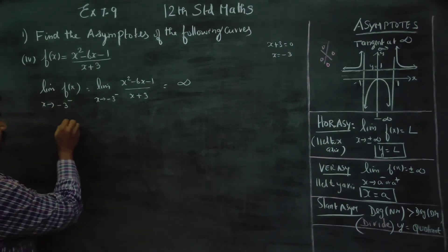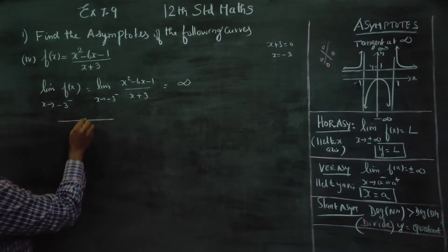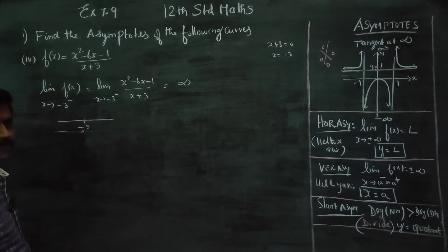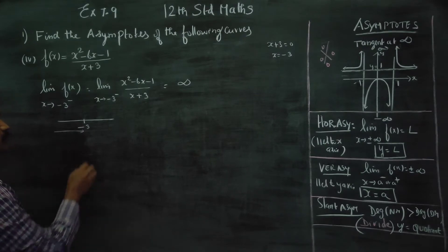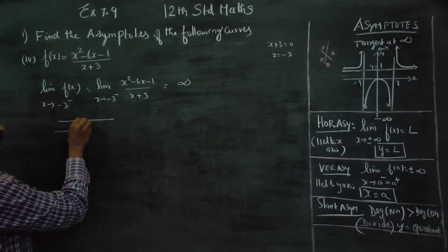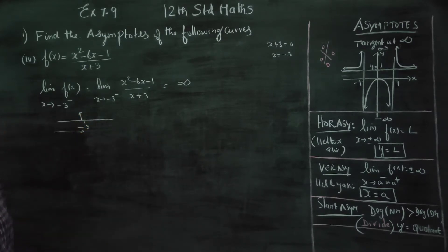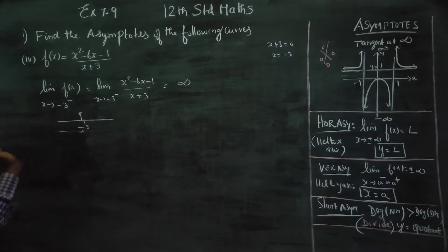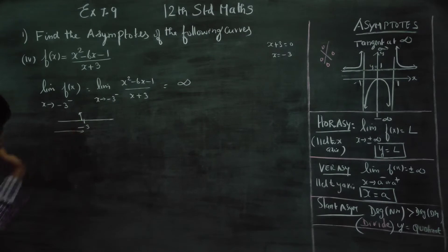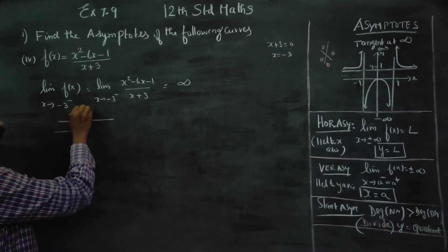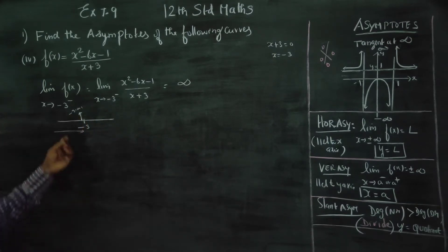Consider x as minus 3.001, which is a value just slightly less than minus 3 — a very small negative displacement. That is, x is minus 3.001, any small value approaching minus 3 from the left.